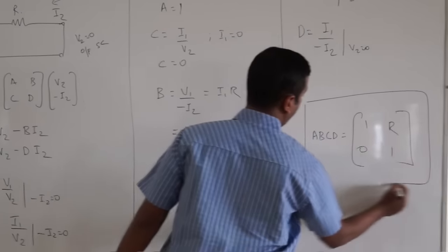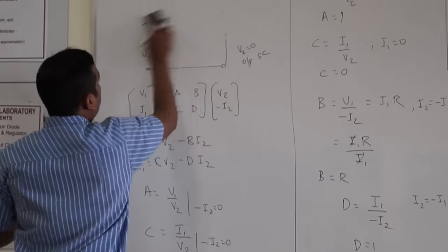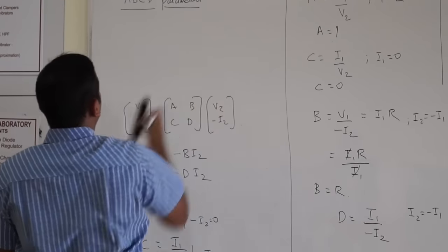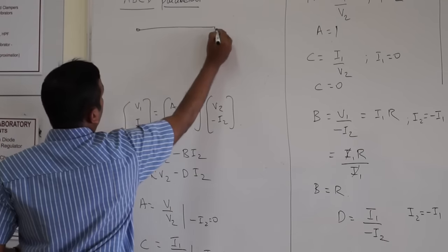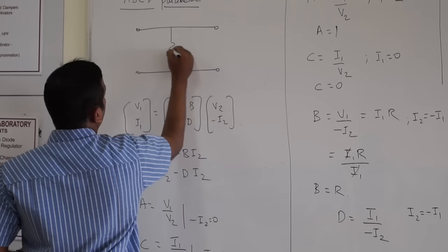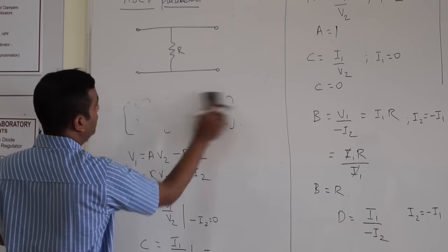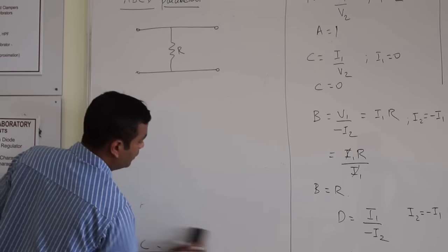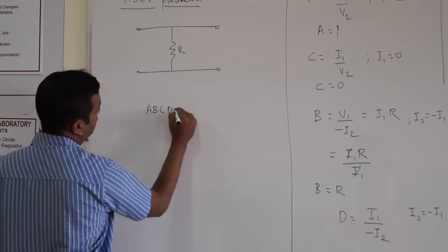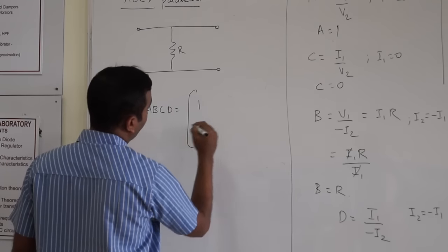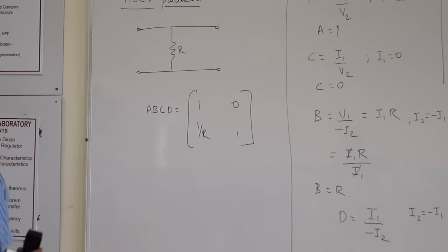Similarly, if we do the analysis for a shunt element — suppose I have a shunt element — if I compute the ABCD parameter of this shunt element, I will get the result. I am not going to compute it; you can try it in your free time. The ABCD parameter of the shunt element is given by: A equals 1, B equals 0, C equals 1 over R, and D equals 1.